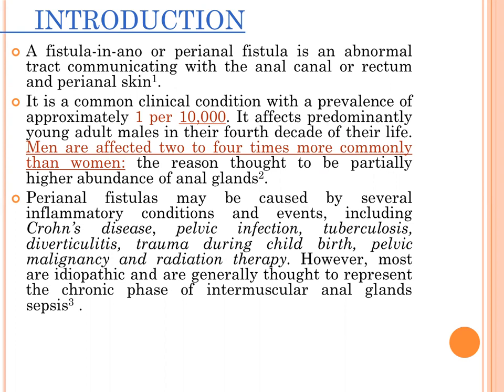Perianal fistula may be caused by several inflammatory conditions and events including Crohn's disease, pelvic infection, tuberculosis, diverticulosis, trauma during childbirth, pelvic malignancy, and radiation therapy. However, most are idiopathic and are generally thought to originate in the chronic phase of intramuscular anal gland sepsis.